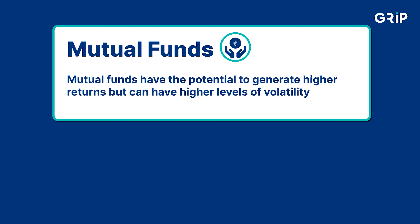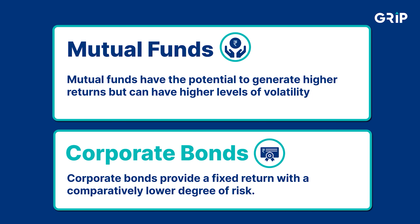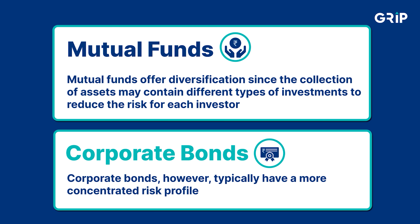Number two, risk and reward: mutual funds have the potential to generate higher returns but can have a higher level of volatility, while corporate bonds provide a fixed return with a comparatively low degree of risk. Number three, diversification: mutual funds offer diversification since the collection of assets may contain different types of investments to reduce the risk for each investor, while corporate bonds typically have a more concentrated risk profile.